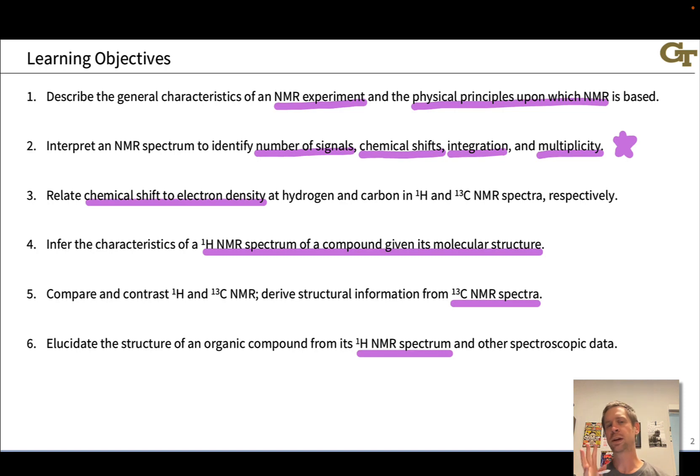There are four key features of NMR spectra that we want to pay attention to from a structure elucidation point of view: the number of distinct signals, where they appear on the x-axis which is known as chemical shift, the area under each signal which is known as the integration, and the pattern of sub peaks within the signal which is called the multiplicity. This pattern of sub peaks is highly unique to NMR and gives us a ton of information about how atoms are connected to each other, particularly in proton NMR.